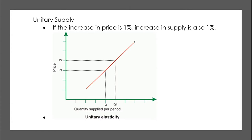Unitary supply, on the other hand — if the increase in price is equal to one, it is called unit supply. The unit supply curve will also look like this.